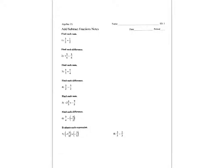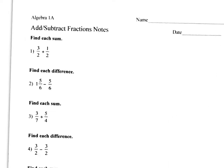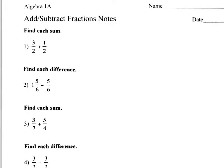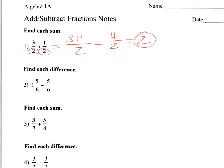We are going to do adding and subtracting fractions. When you add fractions, you always want to make sure that you have a common denominator. In this case we have two, so I rewrite the problem all over the common denominator of two: three plus one. Adding the numerators gives four over two, then you must simplify.